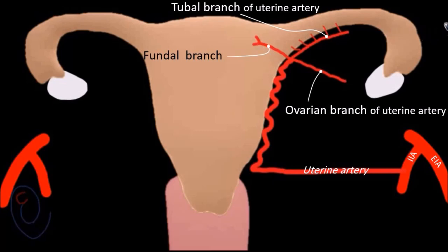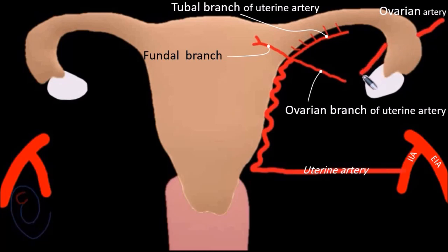Another source of uterine blood supply is the ovarian artery. This artery is a direct branch of the aorta. At the ovarian hilum, it divides into small branches that enter the ovary, and finally it anastomoses with the ovarian branch of the uterine artery.